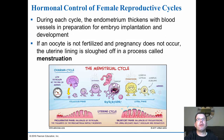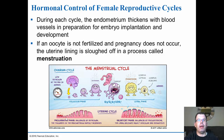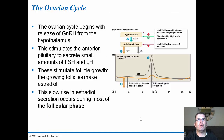During each cycle, the endometrium thickens with blood vessels in preparation for embryo implantation. If the oocyte is not fertilized and pregnancy does not occur, the lining is shed — called menstruation. The ovarian cycle tracks egg cell development while the uterine cycle tracks endometrial proliferation in the uterus.